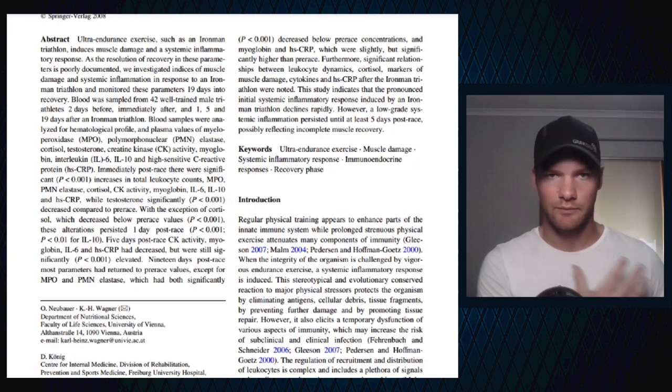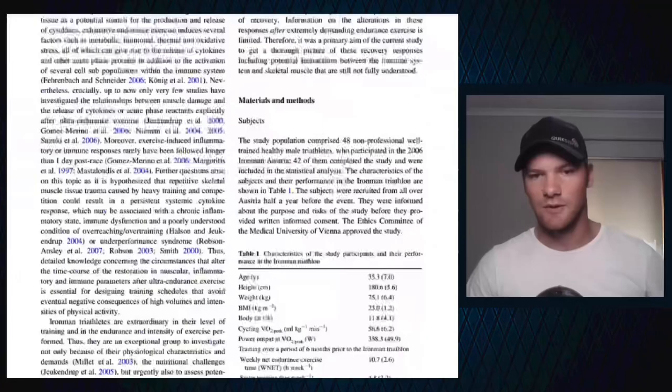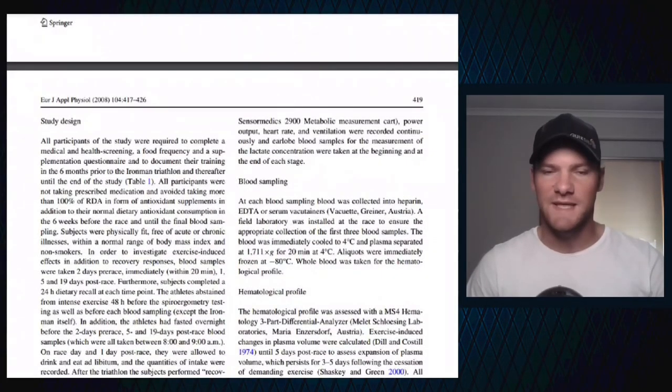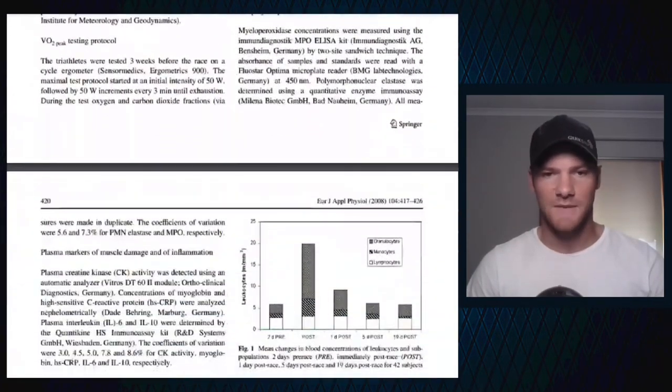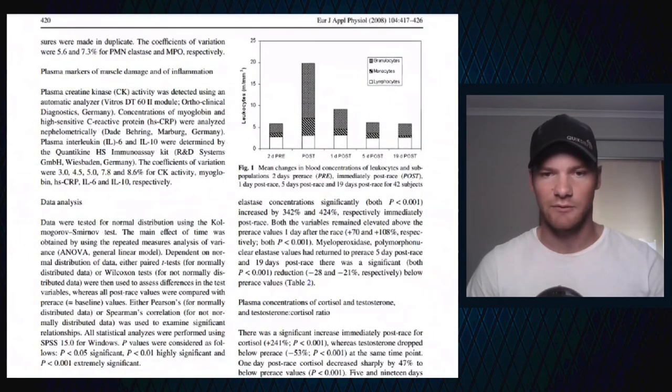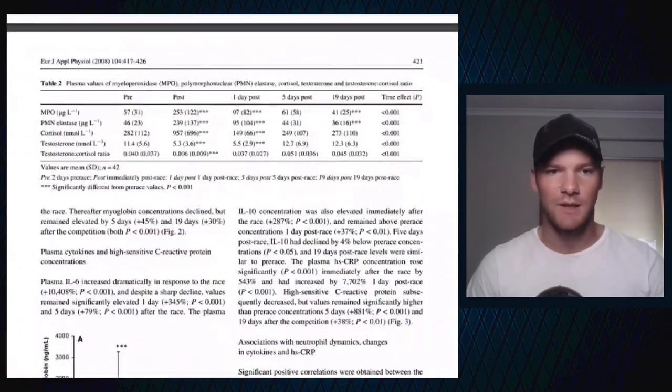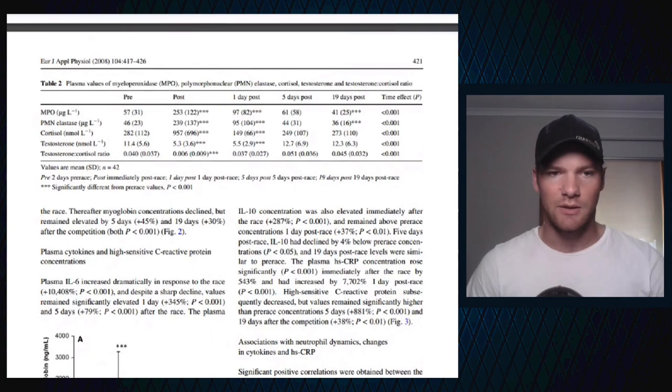Nineteen days post-race most parameters had returned to pre-race values except for myeloperoxidase and polymorphonuclear elastase which had both significantly decreased below pre-race concentrations, and myoglobin and high sensitivity C-reactive protein were slightly but significantly elevated. So this is our overall systemic inflammation still higher than before the race 19 days later. I'll link both studies in the description so you guys can have a look and really go through the methods.